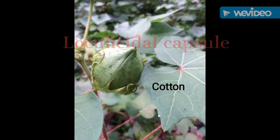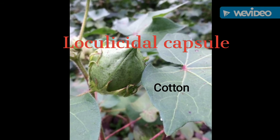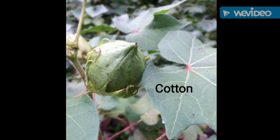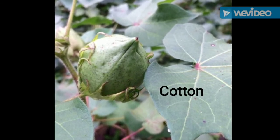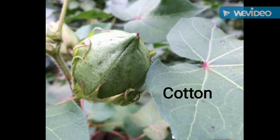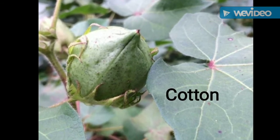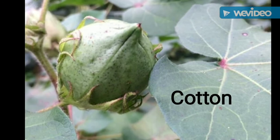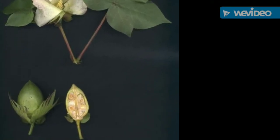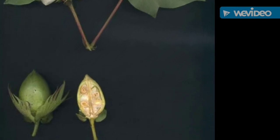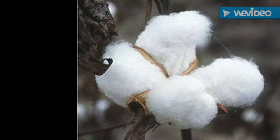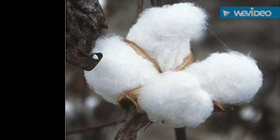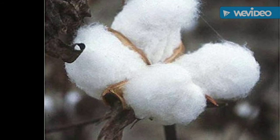Another one — loculicidal capsule. Example: cotton (Gossypium herbaceum). The carpels at maturity dehisce through the middle portion of the locule, and the fruit splits into a number of pieces equal to the number of carpels. Cotton splits into four pieces because there are four carpels.